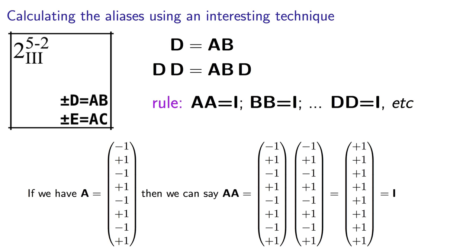So two columns that are the same, multiplied together, always equals I, and can in fact be eliminated.